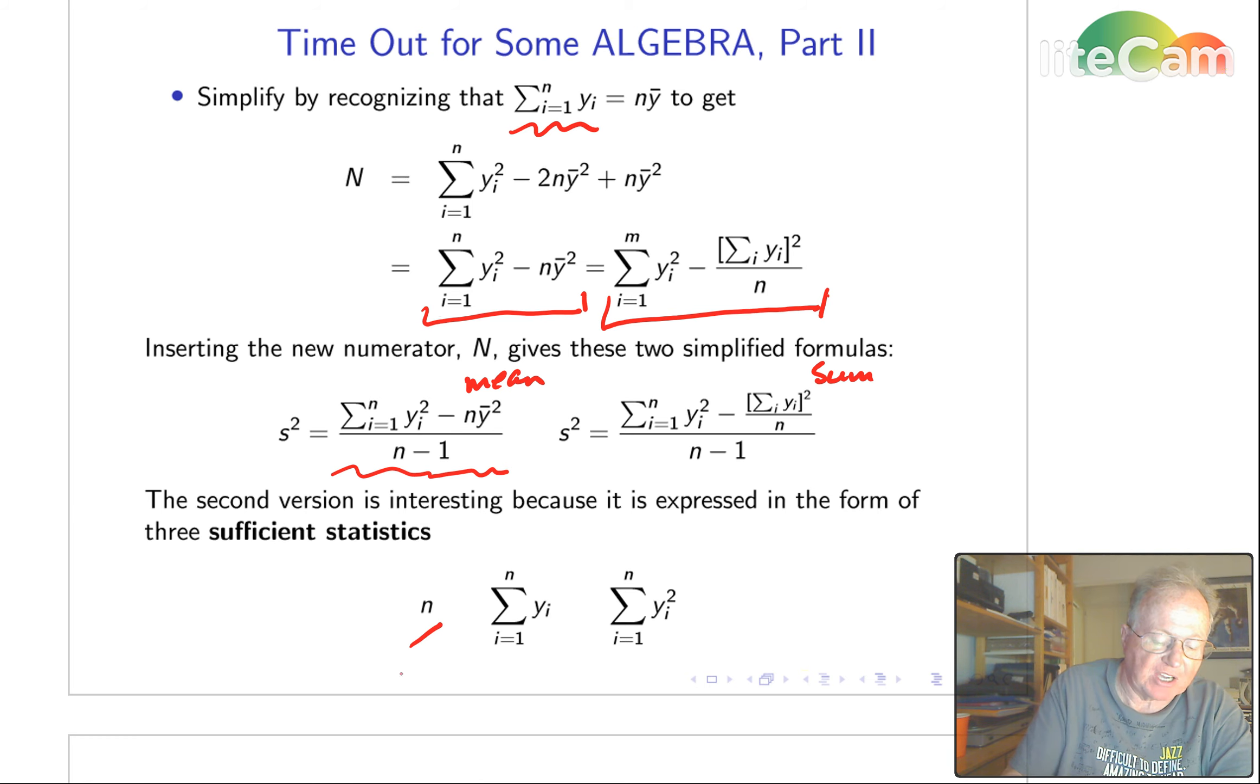We need the sample size, we need the sum, and we need the sum of squares only to calculate variance.